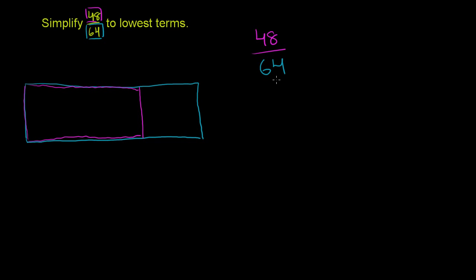Well, the largest number that I can think of that goes into 48, you could do it either by just thinking about it, or you could actually write out all of its factors. But if you were to write all the factors for 48 and all the factors for 64, the one that pops out to me as the largest that goes into both is 16.